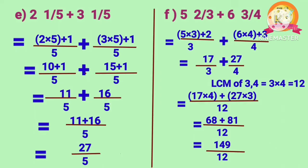Problem F: 5 2 by 3 plus 6 3 by 4. After converting 5 2 by 3 into an improper fraction, we get 17 by 3. After converting 6 3 by 4 into an improper fraction, we get 27 by 4. As the denominators 3 and 4 are different, we calculate the LCM. LCM of 3 and 4 is 12. After adding, we get 149 by 12.